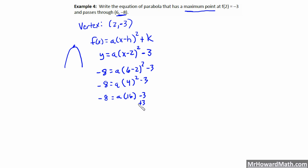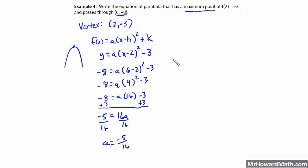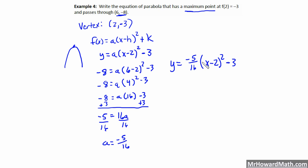Solving for a: add 3 to both sides to get negative 5 equals 16a, then divide both sides by 16. So a equals negative 5 over 16. Now we can write our equation: y equals negative five-sixteenths times x minus 2 quantity squared minus 3. That is the equation of the parabola.